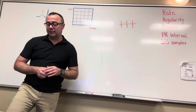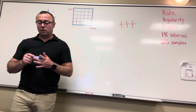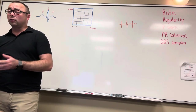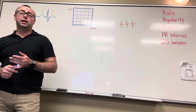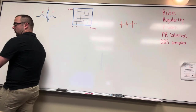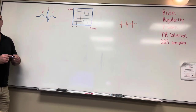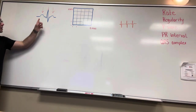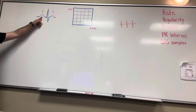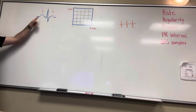When we talk about ECG components, we're going to talk about the waves, the complexes, the segments, the intervals, and the isoelectric line — a whole bunch of terms that seem like they mean a lot. This first wave right here — what is that? A P wave. What is the P wave? Atrial contraction. Correct.